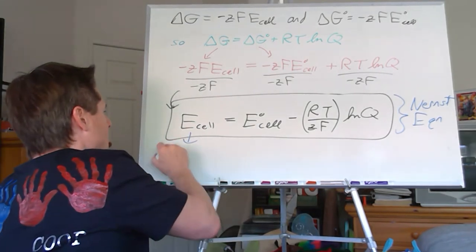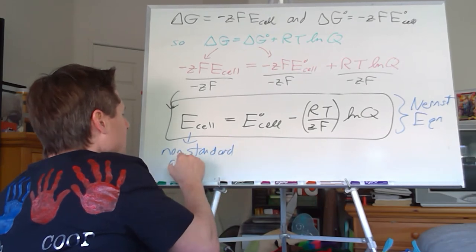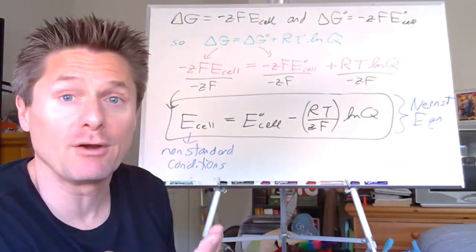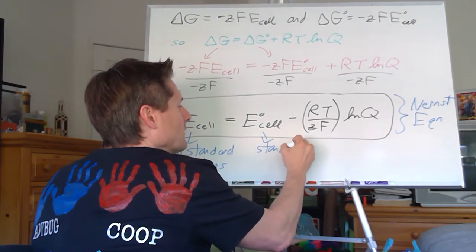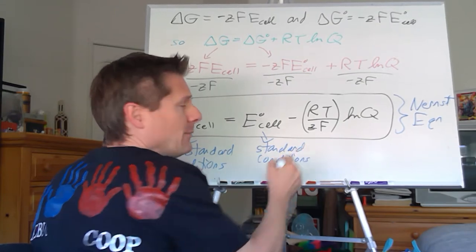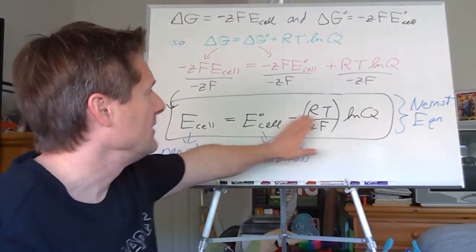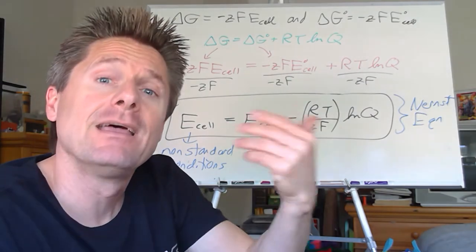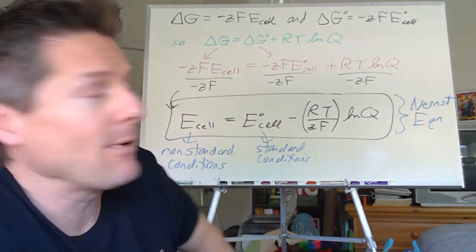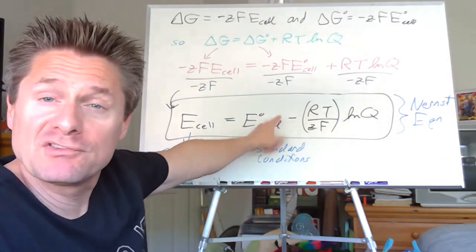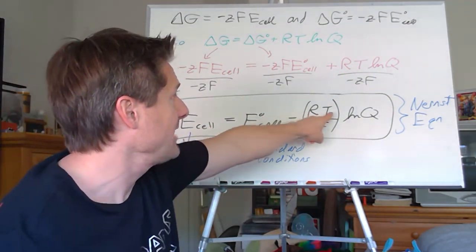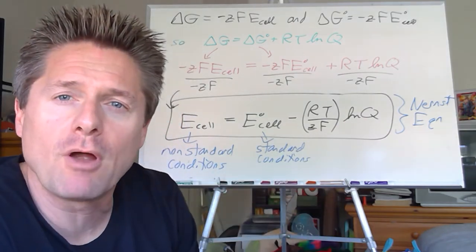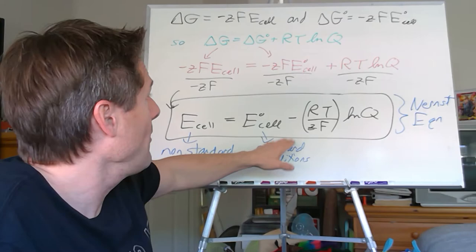This is a great equation for non-standard conditions, meaning concentrations other than an activity of one — we use molarity of one for simplification. I will provide you this equation on exams. This is the big culmination equation of this chapter. Q is products raised to the power of their stoichiometric coefficients over reactants concentrations raised to their stoichiometric coefficients. We can calculate E°-cell using tables from the cathode and anode half reactions, and R, T, z, F, and Q complete everything we need.